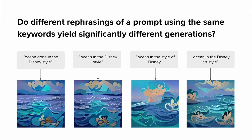The first experiment asked: do different rephrasings of a prompt using the same keywords yield significantly different generations? In natural language, we have many ways of expressing the same meaning. For example, 'ocean done in the Disney style,' 'ocean in the Disney style,' 'ocean in the style of Disney,' and 'ocean in the Disney art style' are practically equivalent linguistically. The generations returned all had the same general characteristics—same color palette and thick strokes—but slightly different compositions.